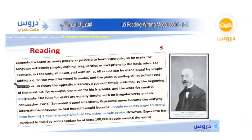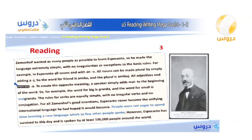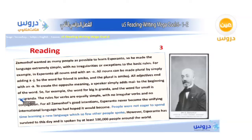The guide could be freely circulated to all people interested in learning the language. Zamenhof wanted as many people as possible to learn Esperanto, so he made the language extremely simple with no irregularities or exceptions to the basic rules. For example, in Esperanto all nouns end with an 'o'. All nouns can be made plural by simply adding a 'j'. So the word for friend is 'amiko' and the plural is 'amikoj'. All adjectives end with an 'a'.